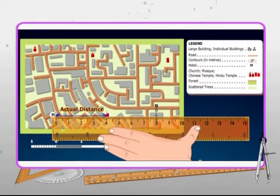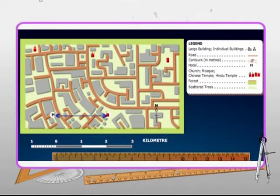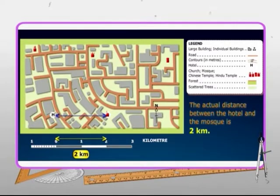To find the actual distance on the ground, place the ruler on the linear scale. Hence, the actual distance between the hotel and mosque is two kilometers.